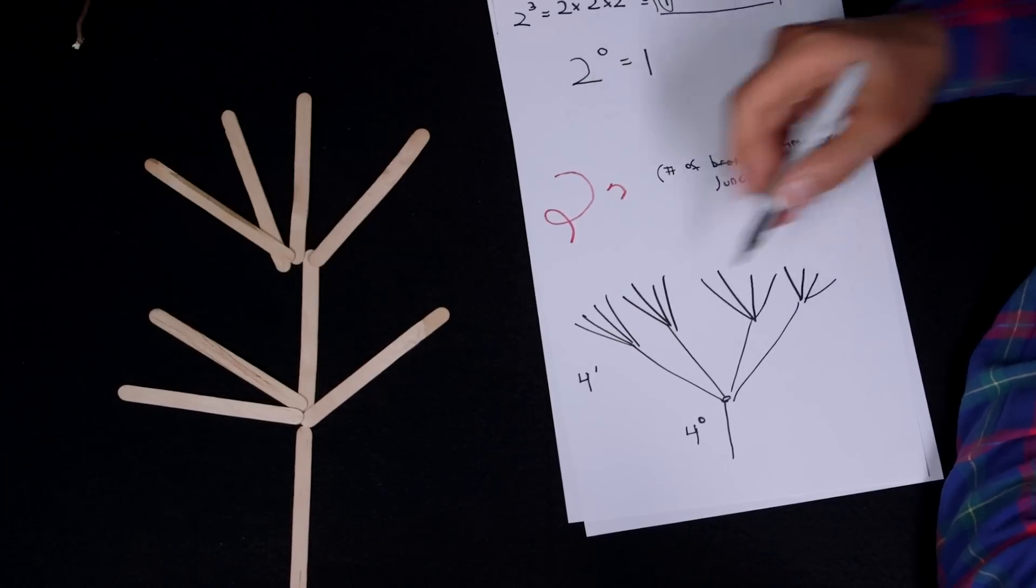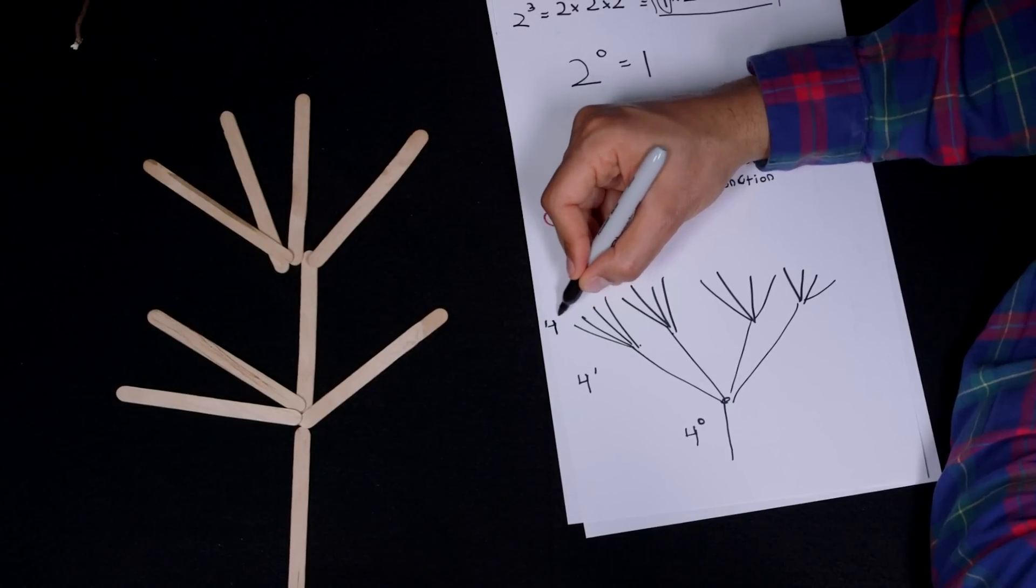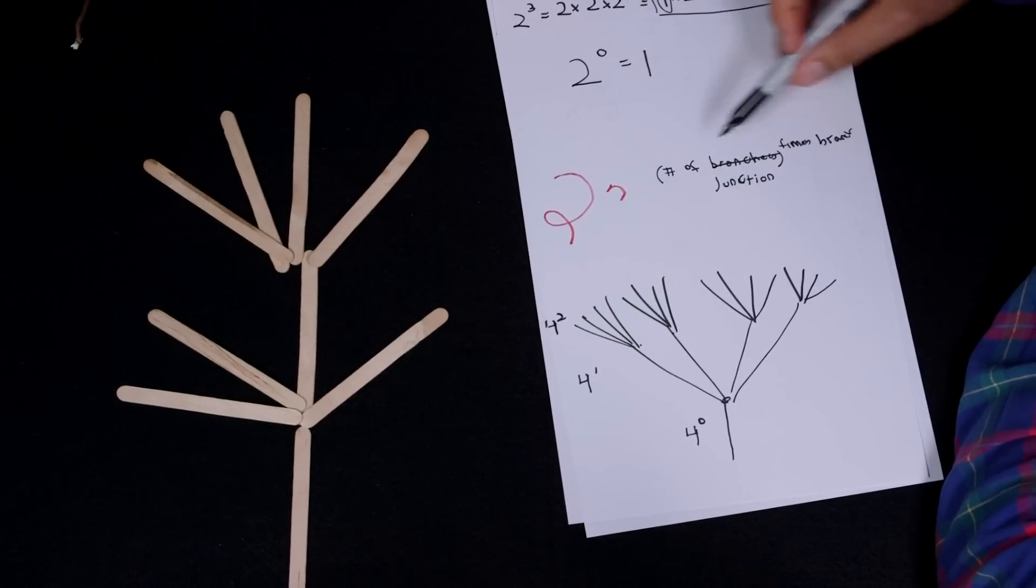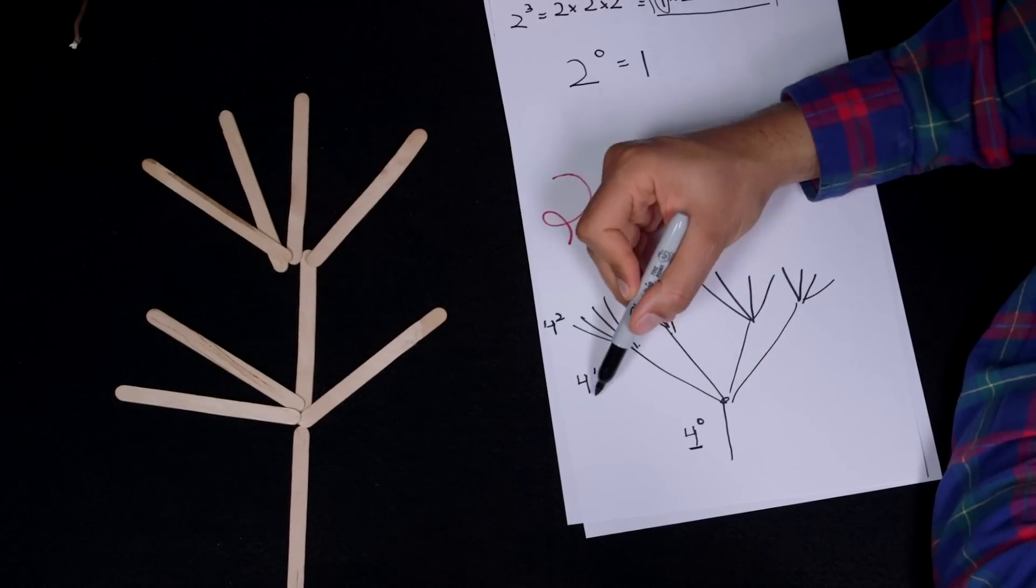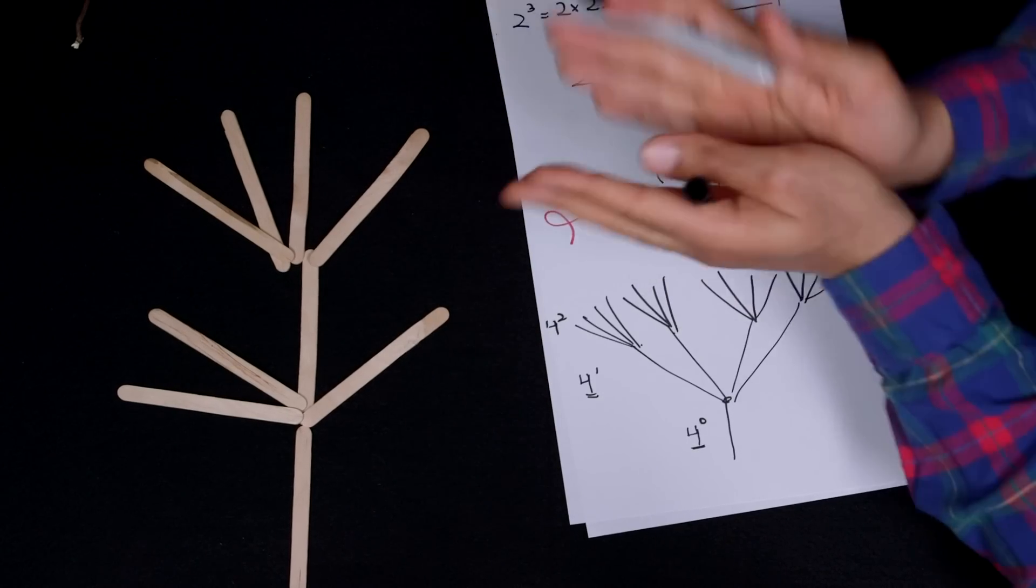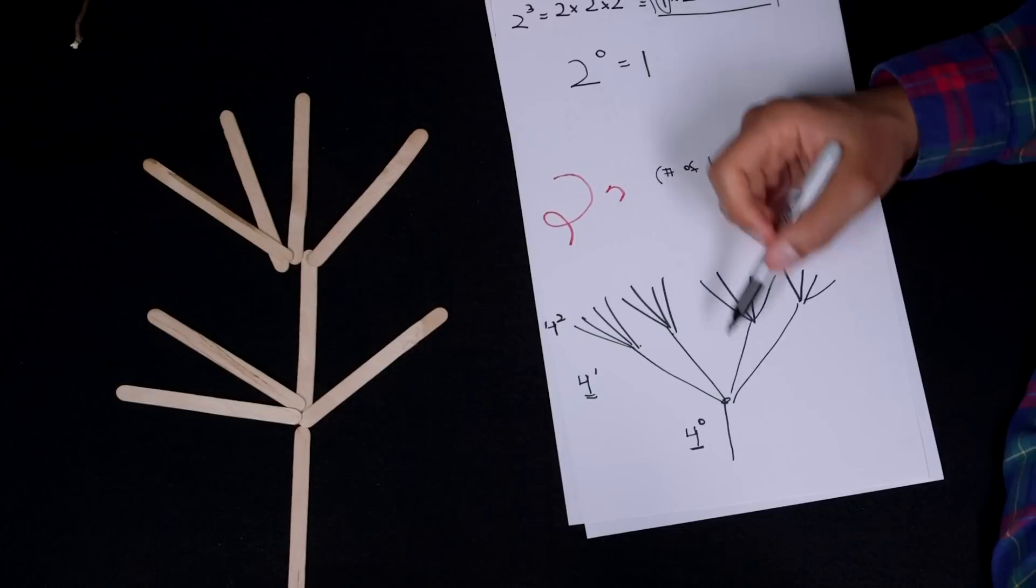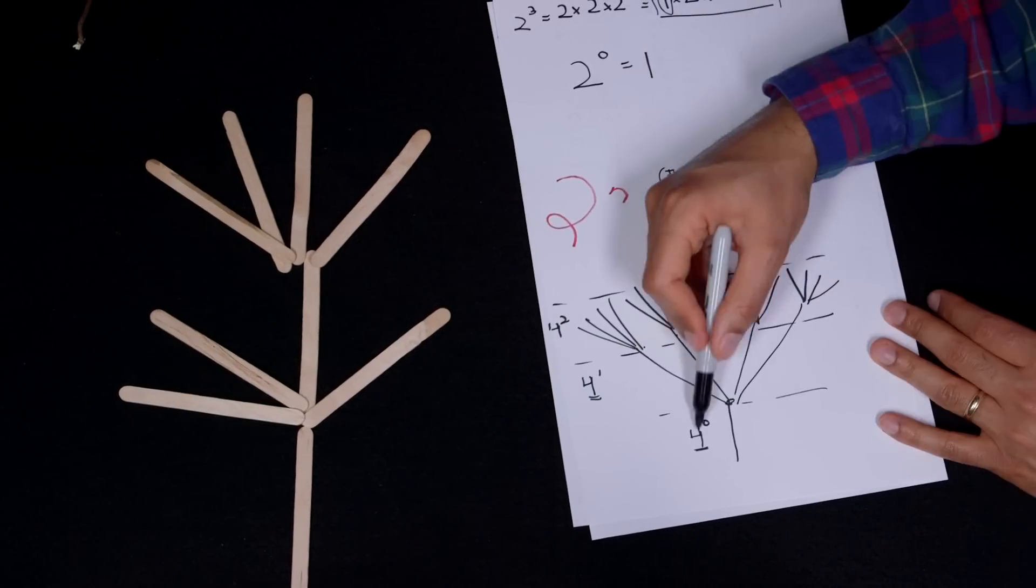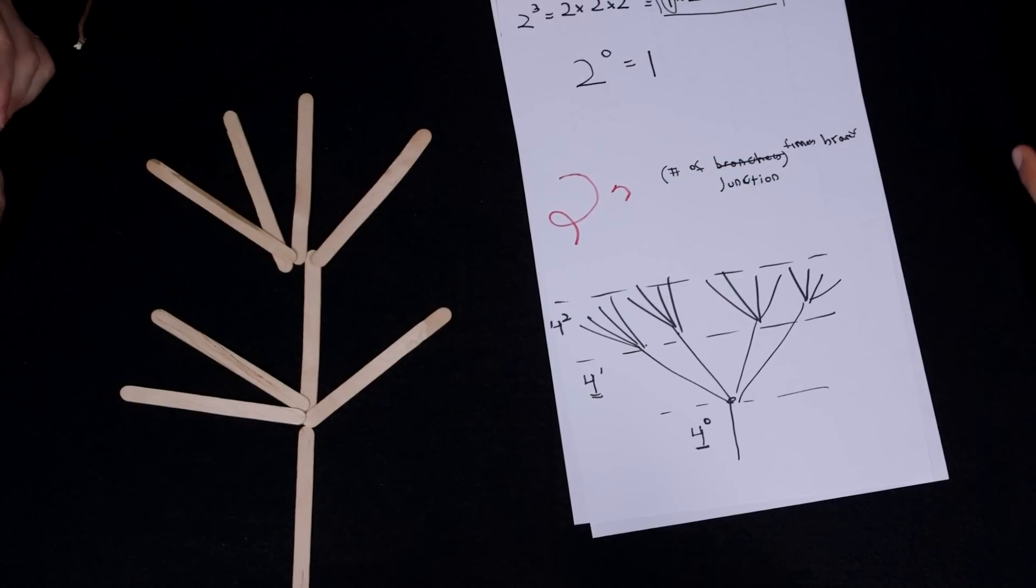And now each of those. So now you've branched twice. So now this is four to the second power. So yeah, the base, or what's called the base when you're taking an exponent, this four right over here, this is how many new branches each of the branches turn into at each of these junctions, you would say. Let's call them junctions. Junctions. You haven't branched yet. Here you've branched once, and here you've branched twice. Nice.